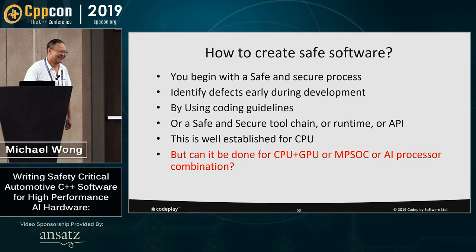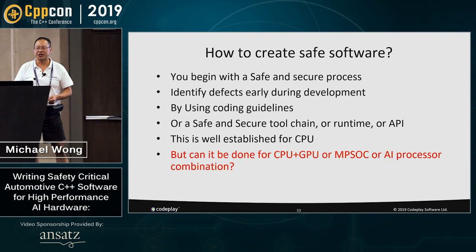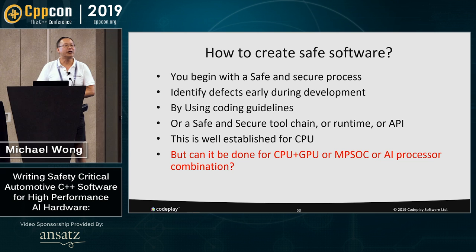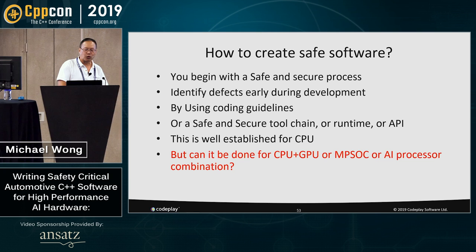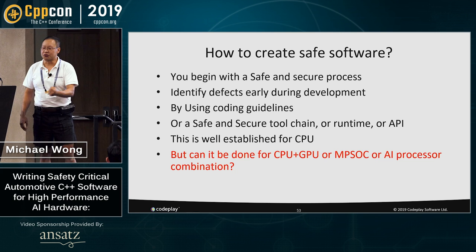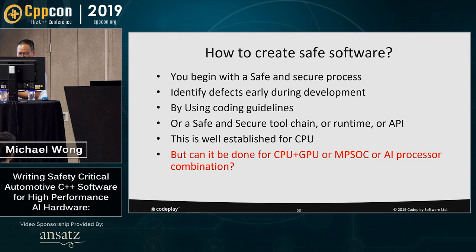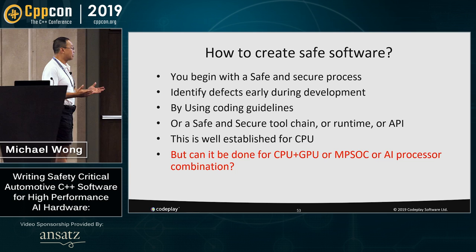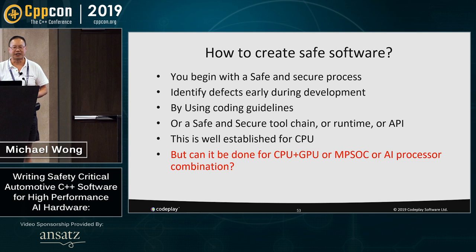You begin with a safe and secure process, trying to identify defects early in the development cycle. We use coding guidelines, safe and secure tool chains, runtimes, or APIs. This is well established for CPUs. But for machine learning and AI, they don't use CPUs — they use GPUs, FPGAs, multiprocessor SoCs masquerading as AI chips. The ability to test these kinds of things on such unique hardware is largely unknown. Some companies are working deeply in this area, trying to define where the boundaries are.